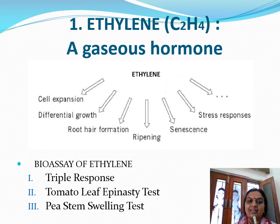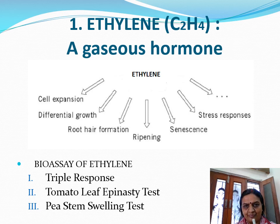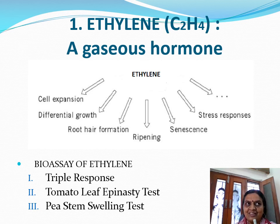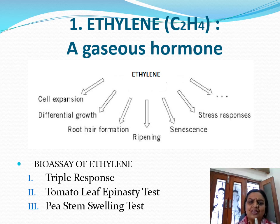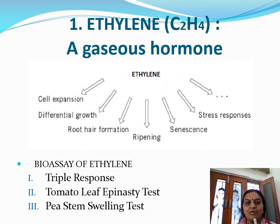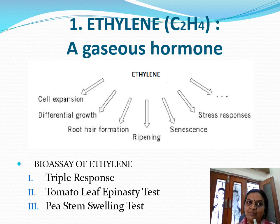Ethylene, the gaseous plant hormone, regulates a range of physiological processes in the plant life cycle, ranging from germination and the development of the root when the seedling comes out of the soil, the opening of the apical hook, to senescence, fruit ripening particularly in climacteric fruits, various stress responses, and many more. By now we know that bioassays are based on the physiological role of the plant growth regulator.